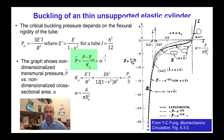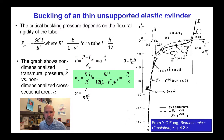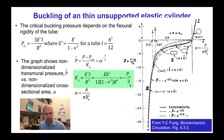k_p is E'I over R cubed, or E·h³ over 12(1 − ν²)·R³, which from the previous result equals minus the critical buckling pressure divided by 3.